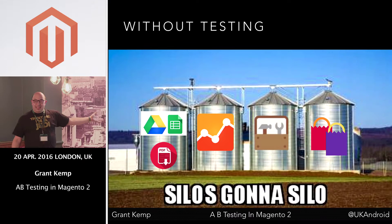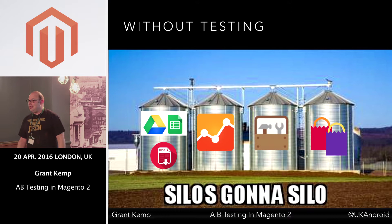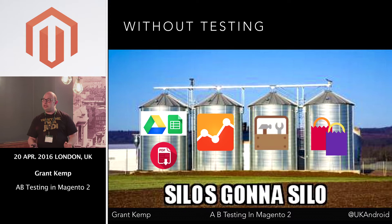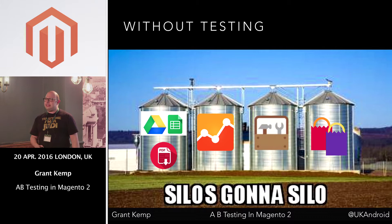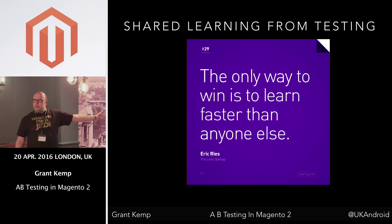Everyone works in silos. Really sad to say, even in Magento world, everyone still uses silos. It's horrible — no one talks to each other. But as soon as you start A-B testing, a test can come from anywhere. It can come from your content editors, from creative. Anyone can say 'I think I've got a really good idea,' and you test it and see what happens, and they can get the kudos and help make more money.